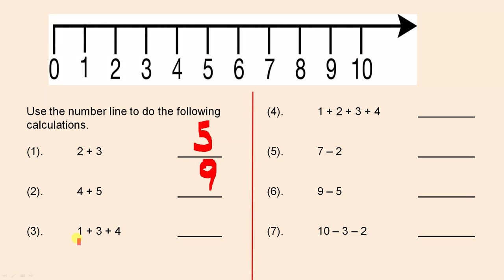The next one: one plus three plus four. The first number is one — put your pencil on the one. The next number is three, so count three places to the right: one, two, three — leave the pencil there. The number after that is four, so count four places to the right: one, two, three, four — and the answer is eight.